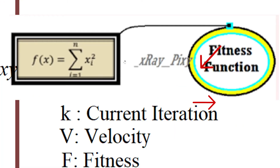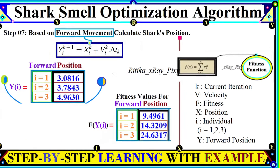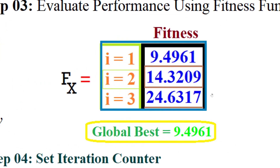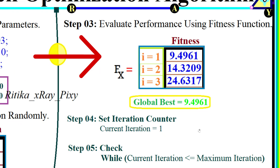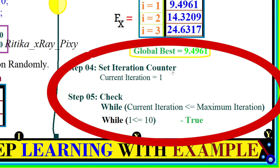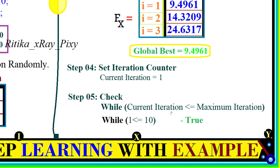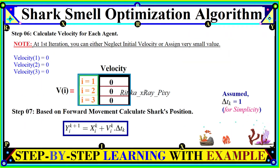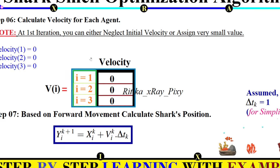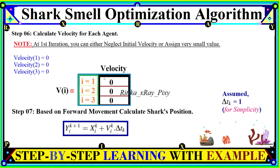Using the cost function, we evaluate the performance for each shark. We obtain fitness values for the 3 sharks, and one is identified as the best among all. We then check the condition: current iteration is 1 and maximum is 10, so the condition is true and we enter inside the main loop, where we calculate the velocity for each agent.